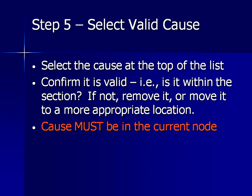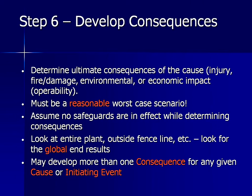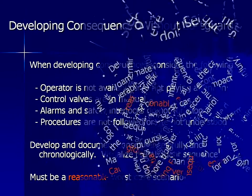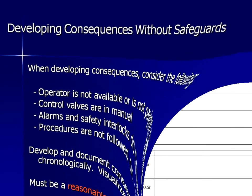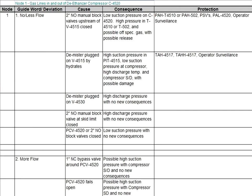Step 5 is to confirm that the cause is valid. If it is, then analyze it; otherwise, remove it. When we discuss consequences, assume that we are operating without safeguards. We should assume that the operator is not paying attention, the control valve is in manual position, alarms and safety interlocks are not operating, and no one is following procedures. It is vital to develop and document consequences fully and chronologically, looking at reasonable worst-case scenarios. The scribe records the consequences.